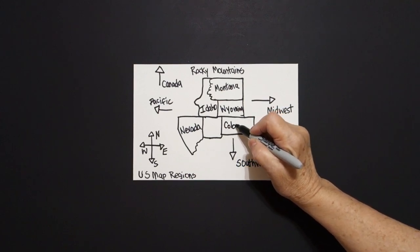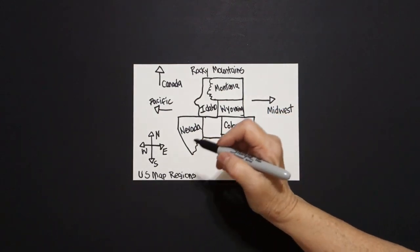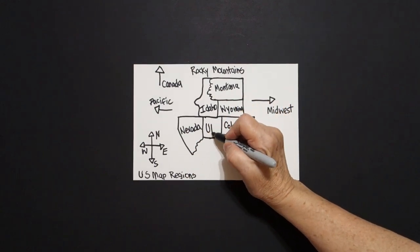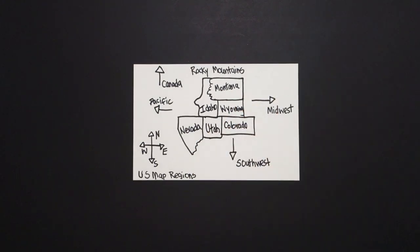Down below, Colorado, and right here, Utah. Alright, let me make sure we've got everything. I think we do. Let's see how we're going to color this in.